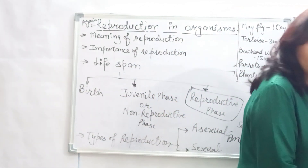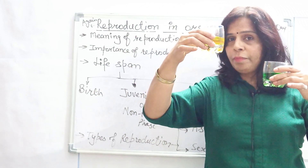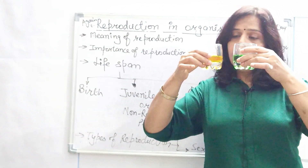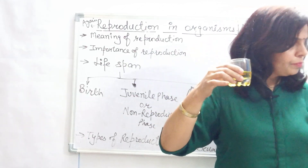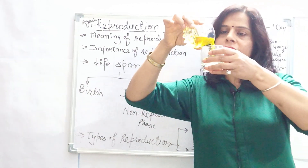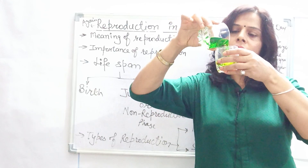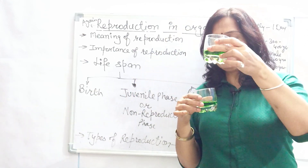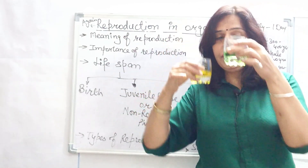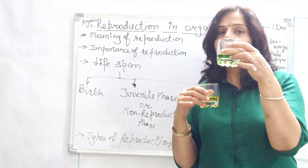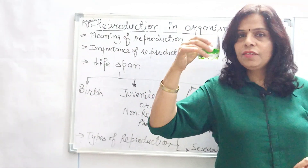In sexual reproduction, two parents are involved. This is one parent with its genetic material, and this is the other parent with its genetic material. In sexual reproduction, both parents give their genetic material to the baby. As you can see, the offspring's genetic material does not exactly resemble either parent — this offspring has undergone variation. With the combination of genetic material from two parents, a unique individual is formed — that is known as variation.